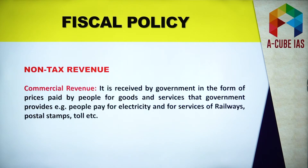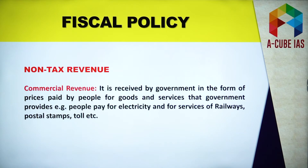Now let's talk about non-tax revenue. Under non-tax revenue, we have incomes made by the government from sources other than taxes. We have commercial revenue and administrative revenue. Under commercial revenue, you make payment for services like electricity, railways, postal stamps, and toll. This money goes to the government — it is received by the government in the form of prices paid by people for goods and services.